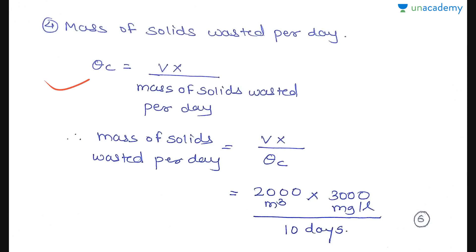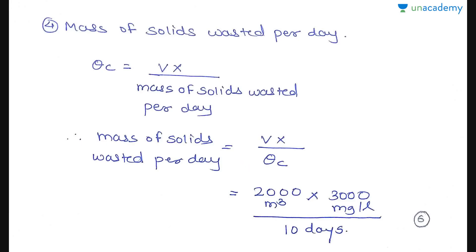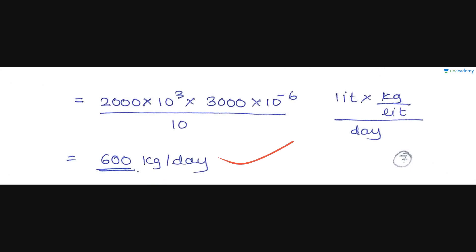Next is the mass of solids wasted per day. We use the formula: θC = V·X / (mass of solids wasted per day). θC is given as 10 days, V = 2000 m³, and X = 3000 mg/L. So mass of solids wasted per day = V·X / θC. Converting m³ to liters and mg to kg with appropriate unit conversions, we get 600 kg/day.